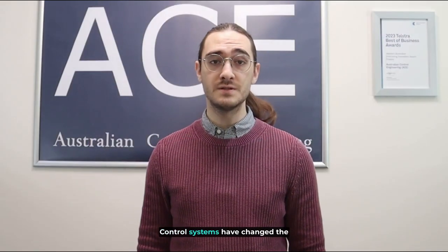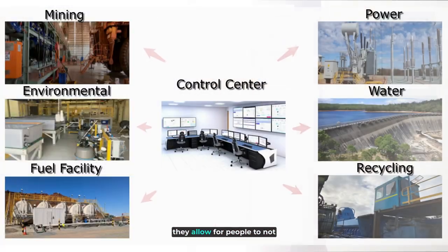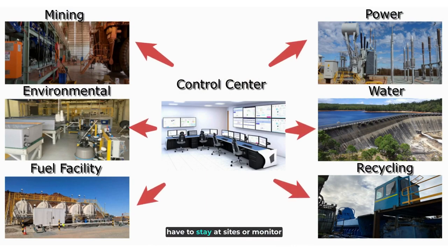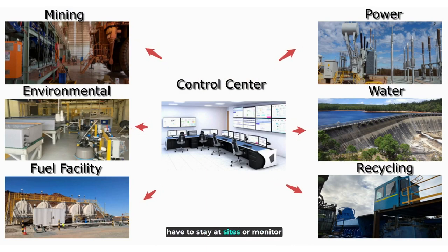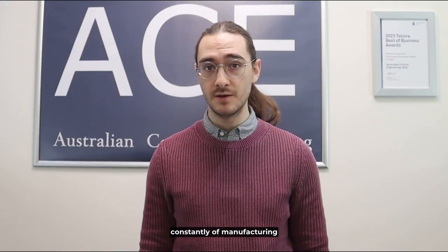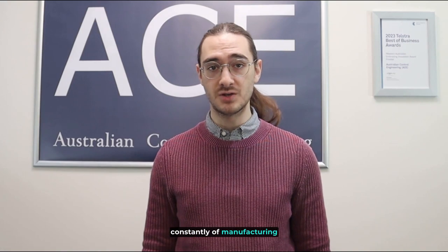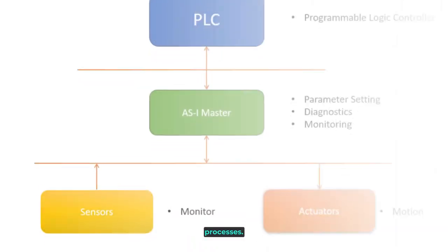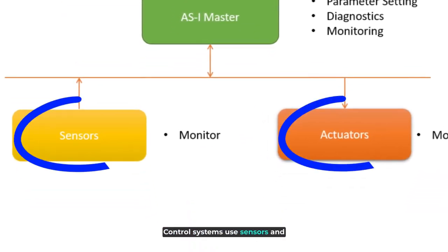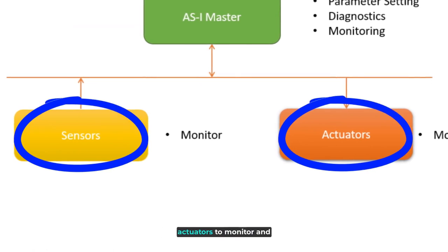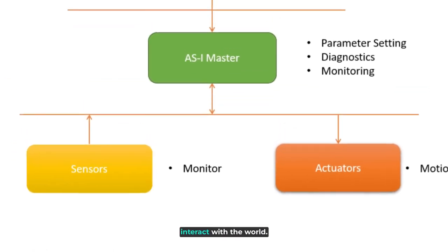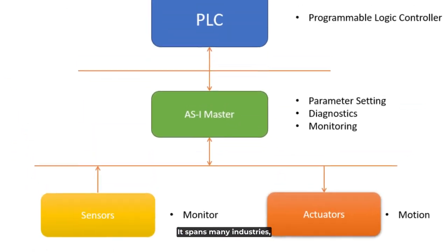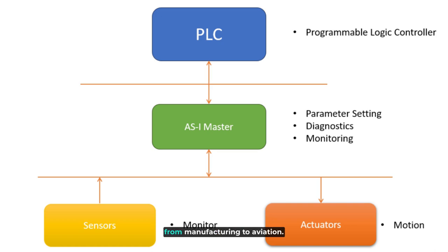Control systems have changed the world of engineering in that they allow for people to not have to stay at sites or constantly monitor manufacturing processes as well as other important processes. Control systems use sensors and actuators to monitor and interact with the world, spanning many industries from manufacturing to aviation.